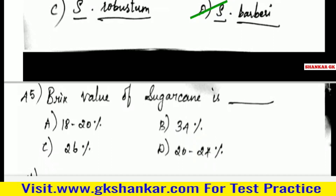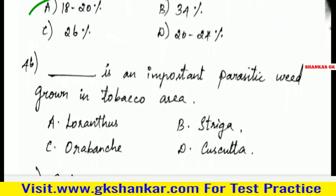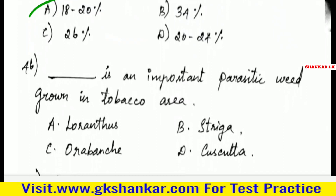Forty-fifth question: Brix value of sugarcane is — A. 18 to 20%, B. 34%, C. 26%, D. 20 to 24%. Answer: A. 18 to 20%.